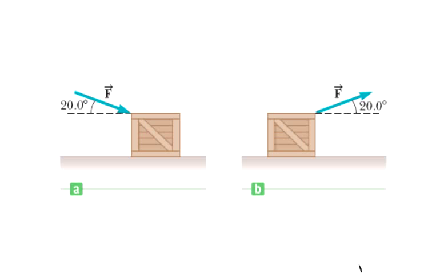Question number 19 says a 1400 newton crate, so that's its weight, not its mass. A 1400 newton crate is being pushed across a level floor at a constant speed by a force of 330 newtons at an angle of 20 degrees below the horizontal, as shown in the figure below. What is the coefficient of kinetic friction between the crate and the floor?